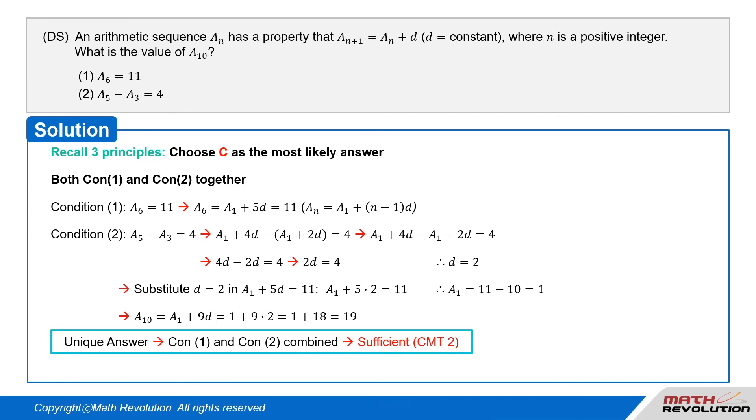The answer is unique, so both conditions 1 and 2 combined are sufficient by CMT2, which states that the number of answers must be 1. Both conditions 1 and 2 together are sufficient. Thus, C is the correct answer. Answer: C.